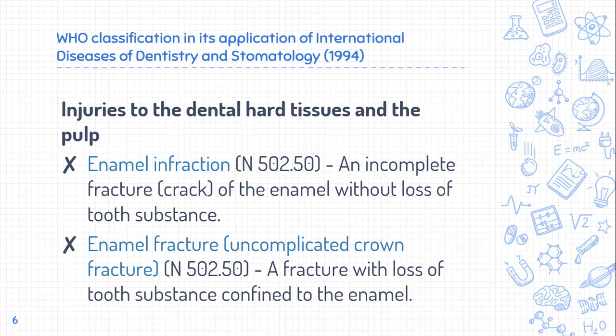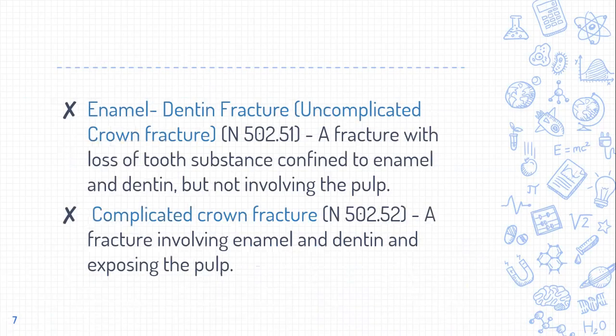Next is enamel fracture — an uncomplicated crown fracture with loss of tooth substance confined only to the enamel. After that is enamel-dentin fracture, also an uncomplicated crown fracture, where enamel and dentin are involved but the pulp is not. A fracture with loss of tooth substance confined to enamel and dentin but not involving the pulp.